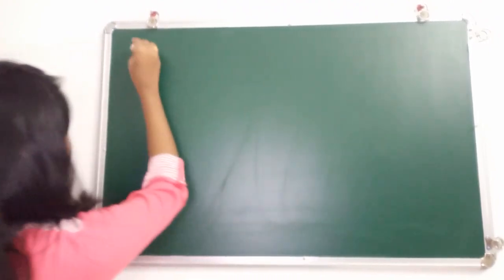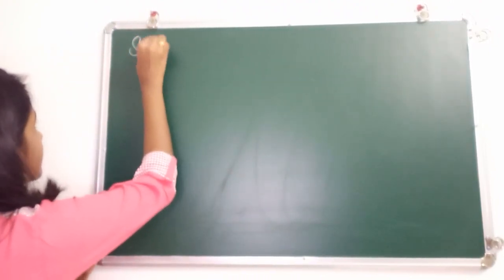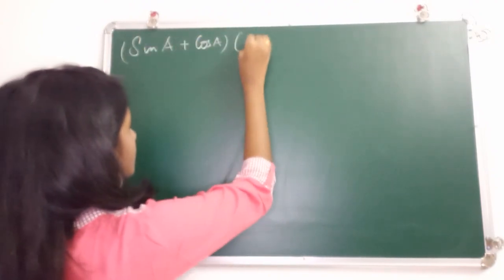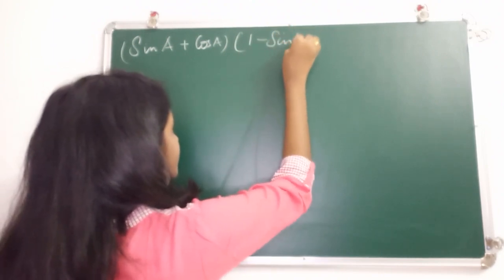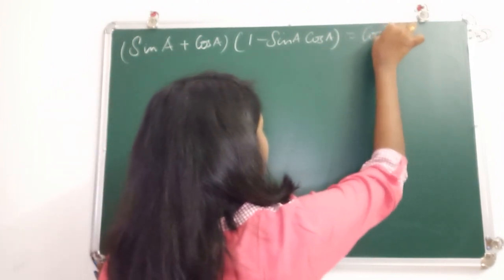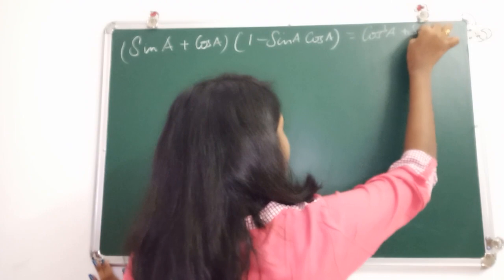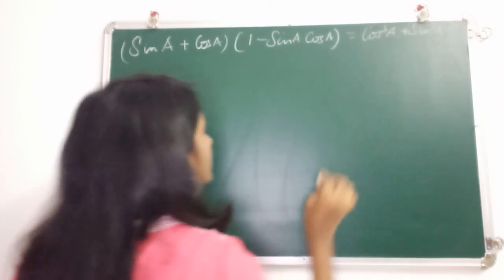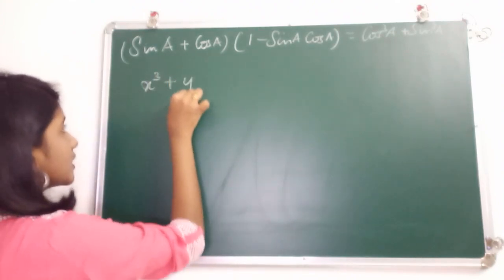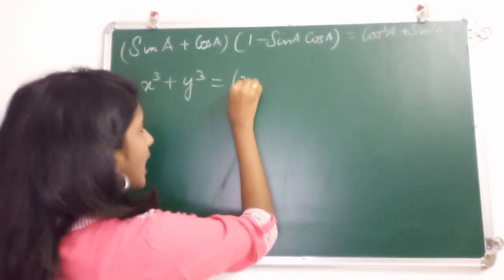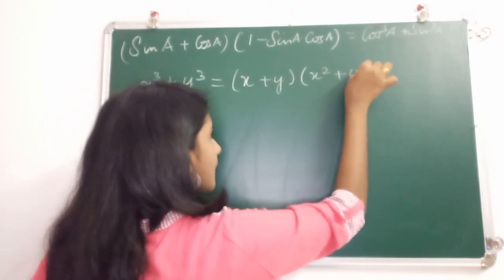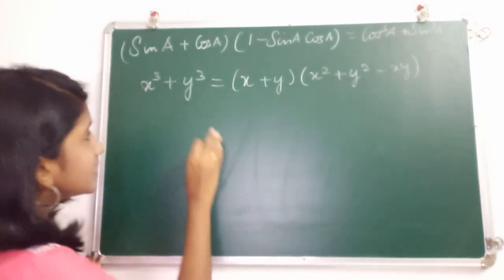Let's move to the next proof: (sin A + cos A)(1 minus sin A cos A) is equal to sin³A + cos³A. We know the identity x³ + y³ equals (x + y)(x² + y² minus xy).